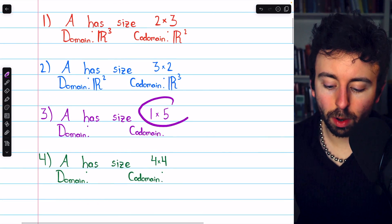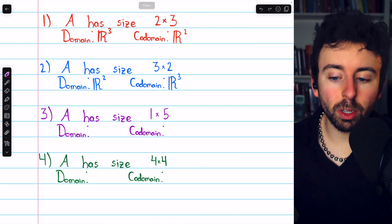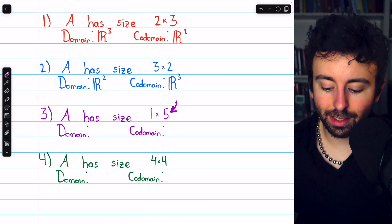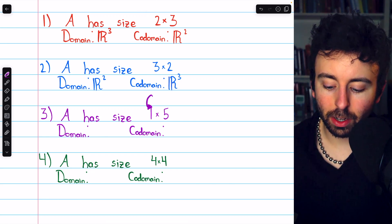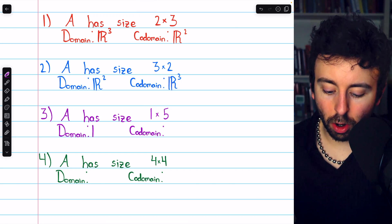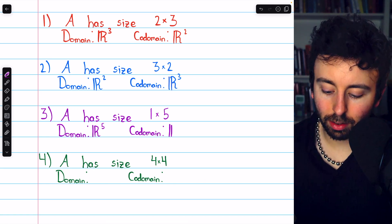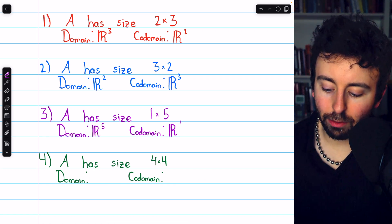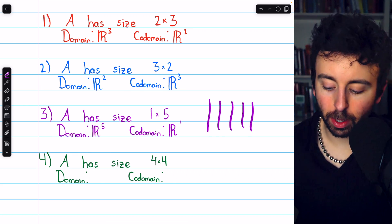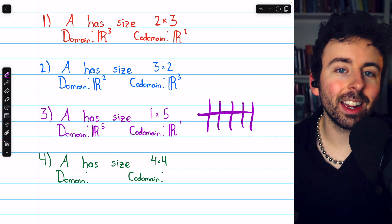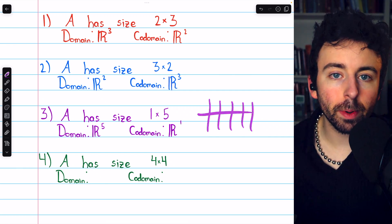Next, number three. A has size 1×5. At this point, you know that the number of columns is the dimension of the domain, and the number of rows is the dimension of the codomain. So the domain is R⁵, and the codomain is R¹. We have five columns, one for each input variable, and then one row telling us how to combine those input variables to get the output variable.